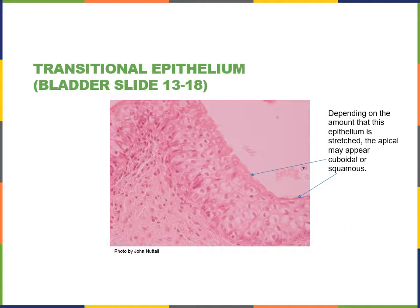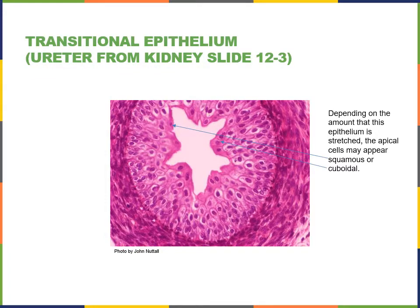The function of the transitional epithelium is to allow stretching of the urinary tract. Here's another example from the ureter, the tubes that connect from the kidney down to the urinary bladder. The transitional epithelium has multiple layers of cells with some appearing squamous, some cuboidal, some tall, and some round. This variety of cell shapes results from the stretching of the epithelium, which accounts for the change in cell shape.